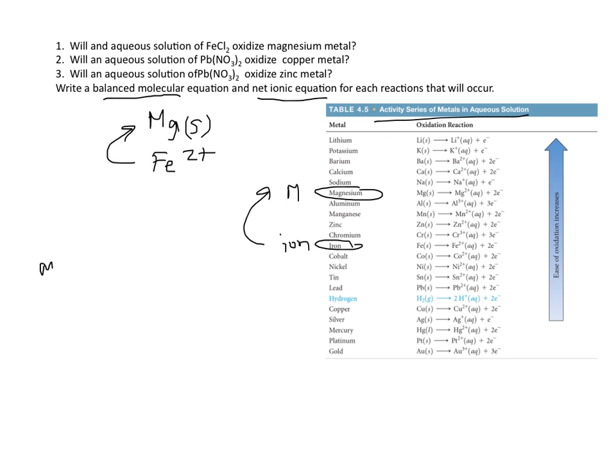That's aqueous, and that's going to give us MgCl2 aqueous plus Fe. And if we look at the number of atoms, it looks like this is balanced. So this is our balanced molecular equation.